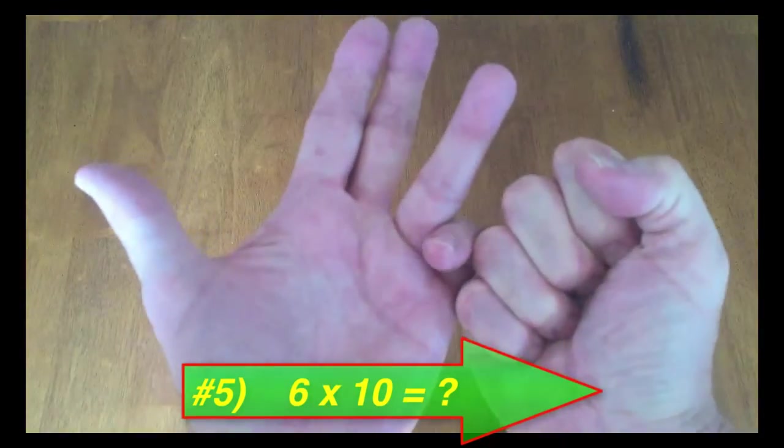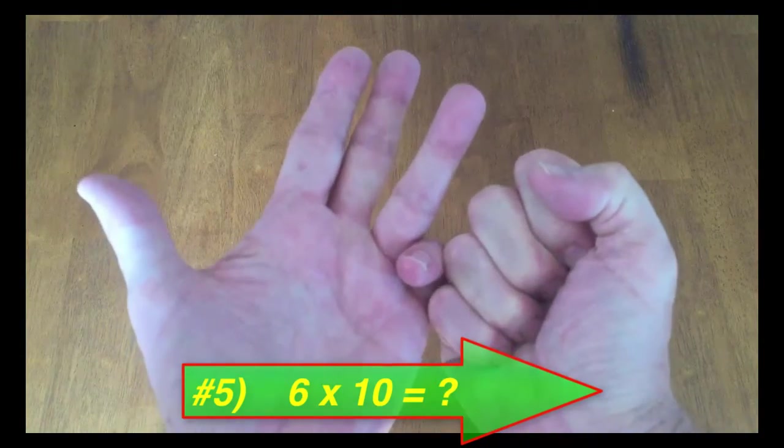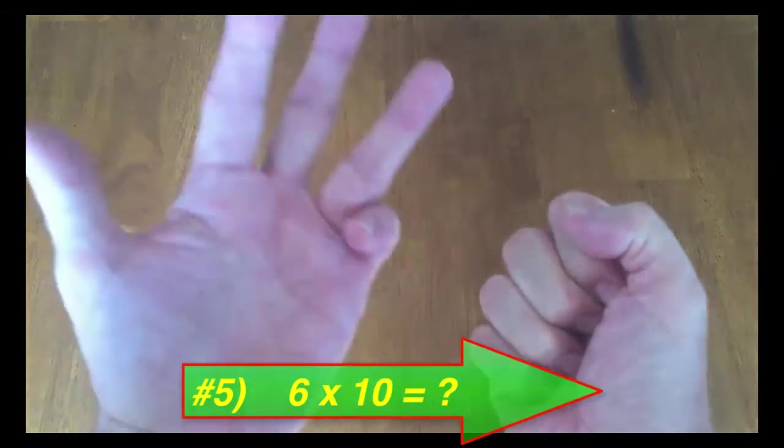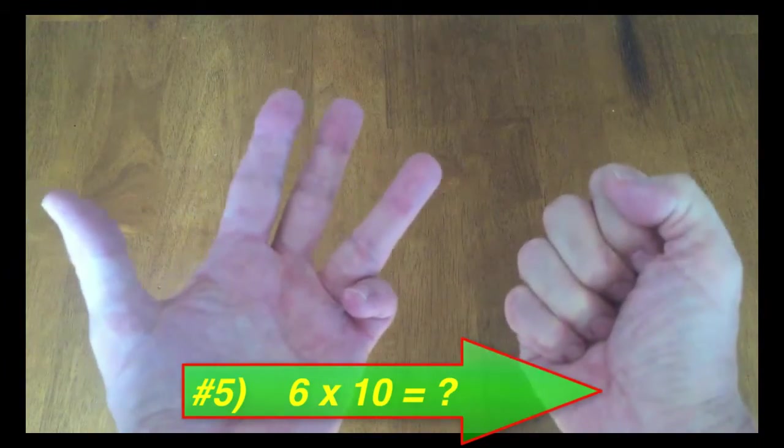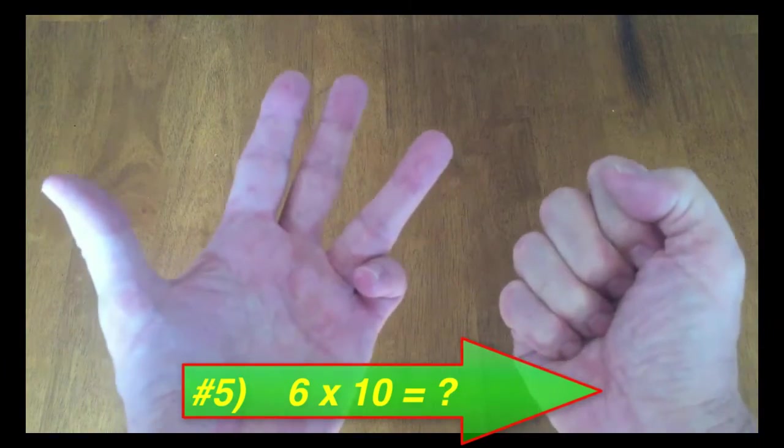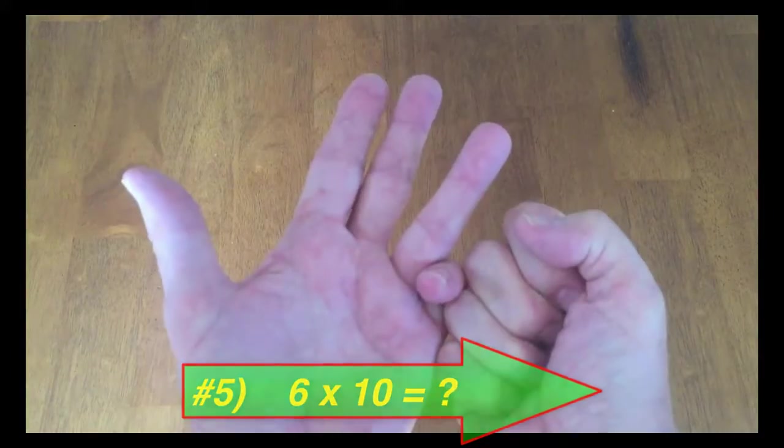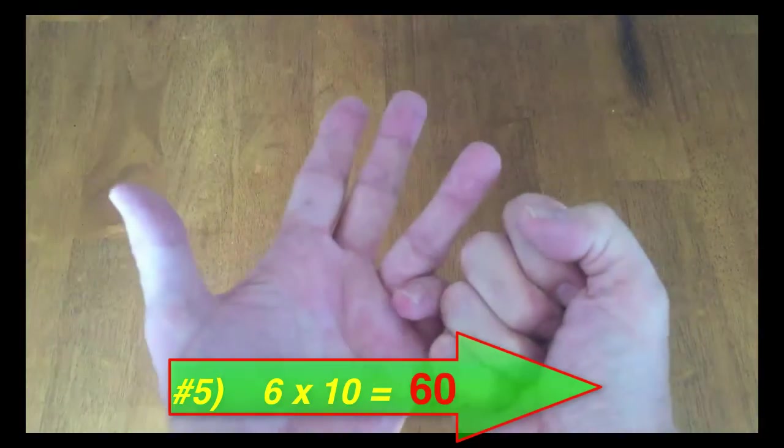So we put our hands together. We've got 6 fingers down. We multiply that by 10. That gives us 60. Look at our up fingers. 4 on the left hand, 0 on the right hand. 4 times 0 is 0. Add 0 to 60. That's 60. So 6 times 10 is 60.